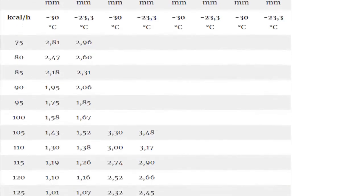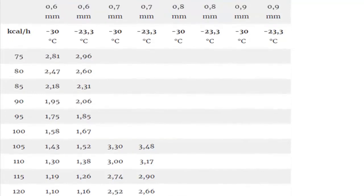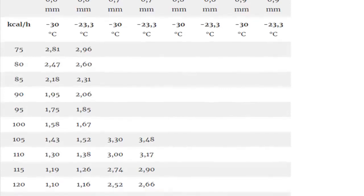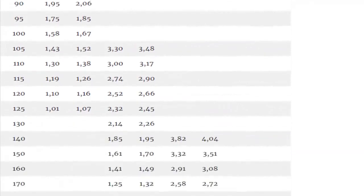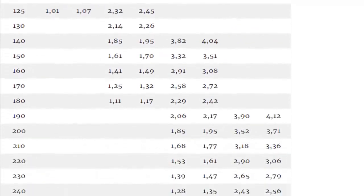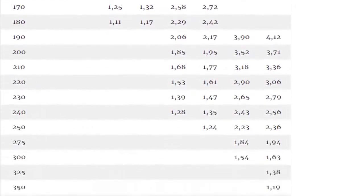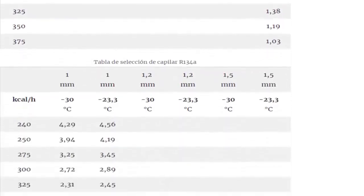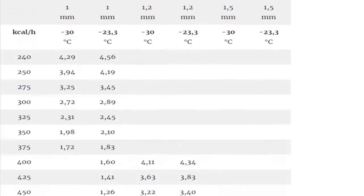1. Capillary tubes depend on both their length and their diameter to determine their total restriction. 2. The mission of the capillary is to delay the passage of refrigerant that reaches the evaporator to maintain the low pressure that causes the suction of the compressor. 3. The two variables to take into account for capillary selection are mainly the evaporator temperature and the cooling capacity of the compressor. 4. We must not confuse the cooling capacity with the electrical power of the compressor, the latter normally measured in HP.